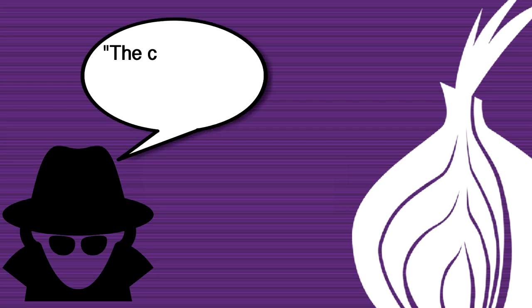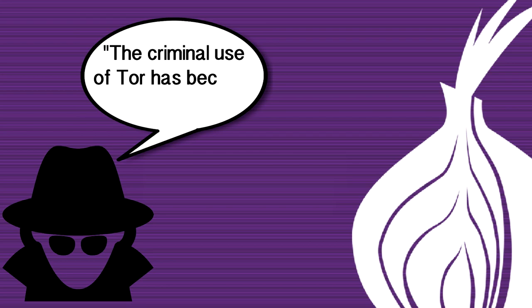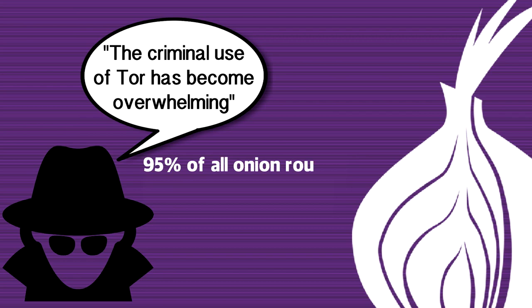And as you might expect, Tor has sadly fallen into the hands of a less savoury crowd too. The organization's former executive director stated that the criminal use of Tor has become overwhelming, and by his own estimates, around 95% of all Onion routing is for criminal activity.